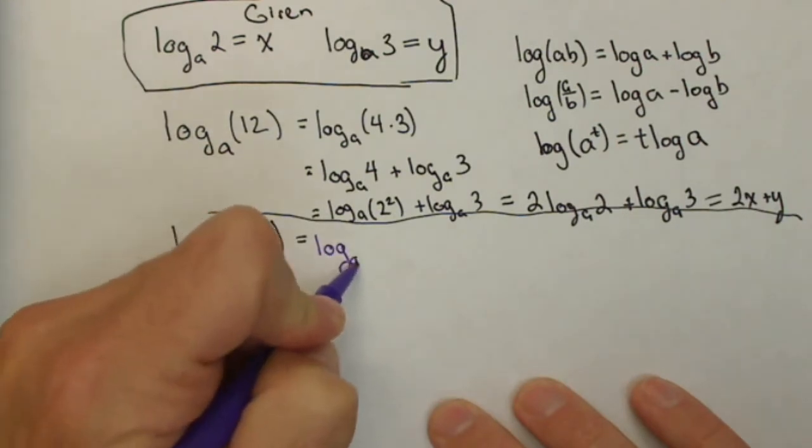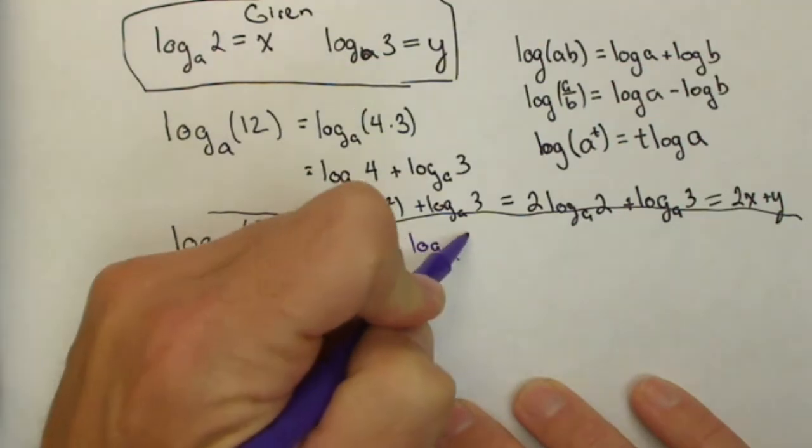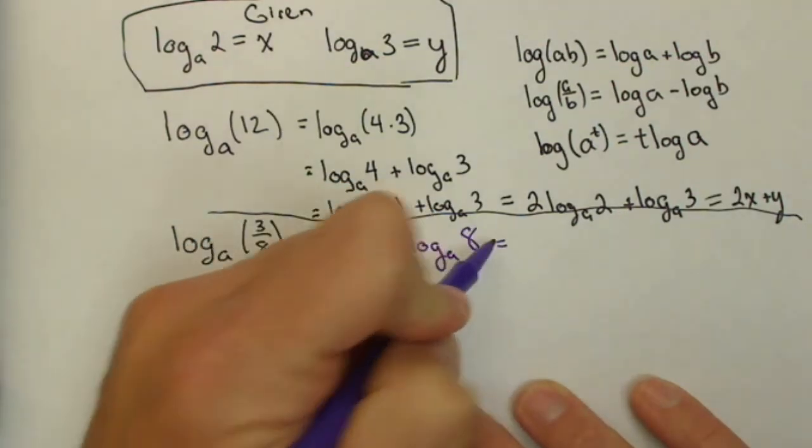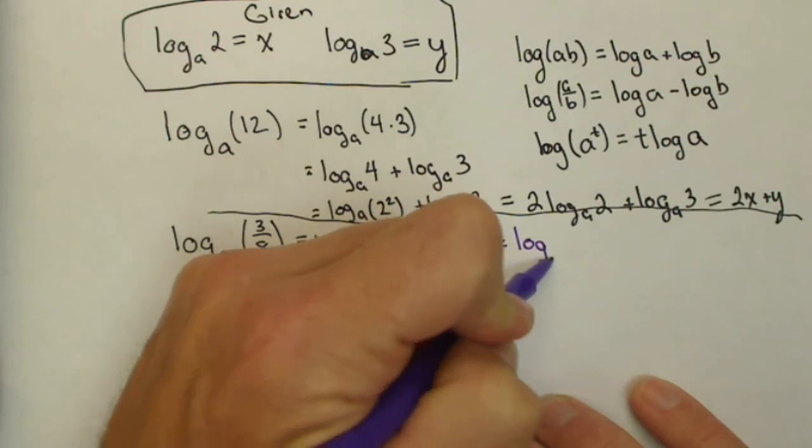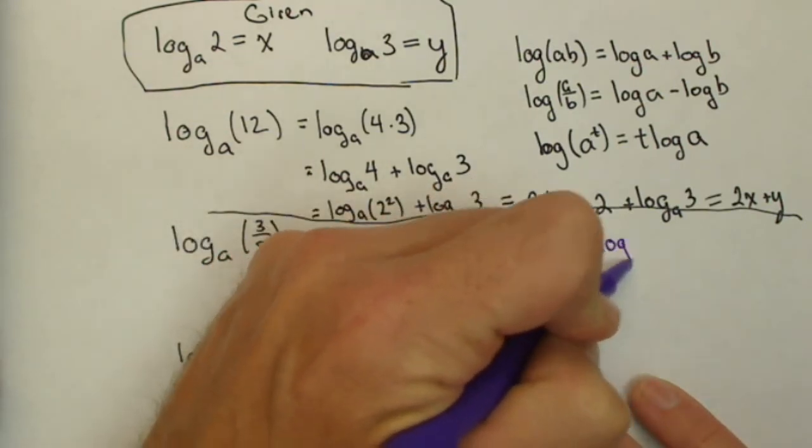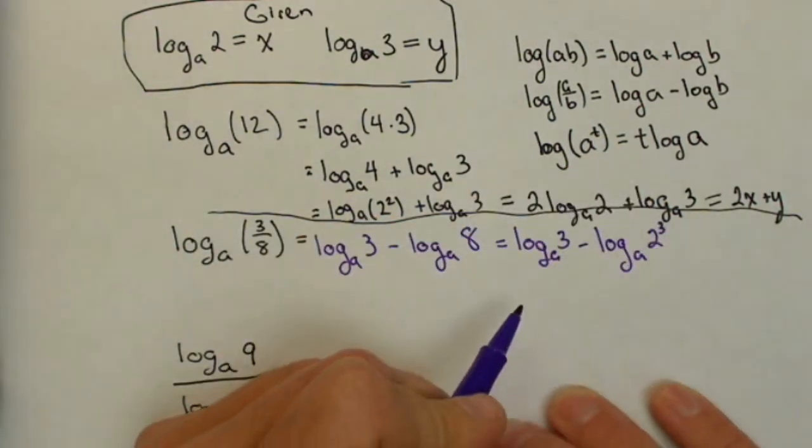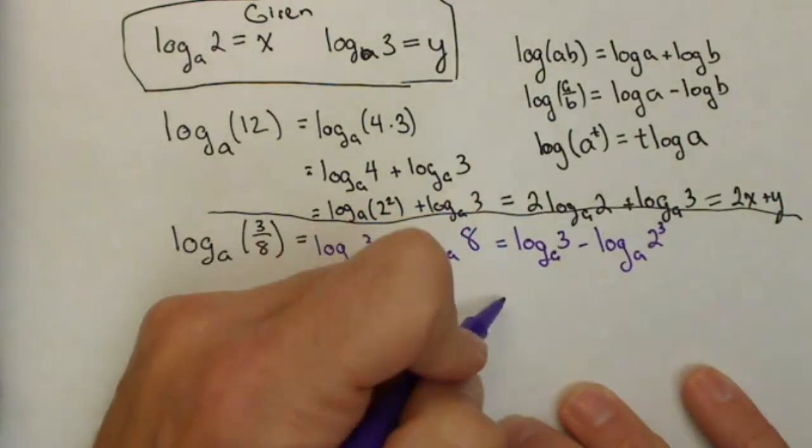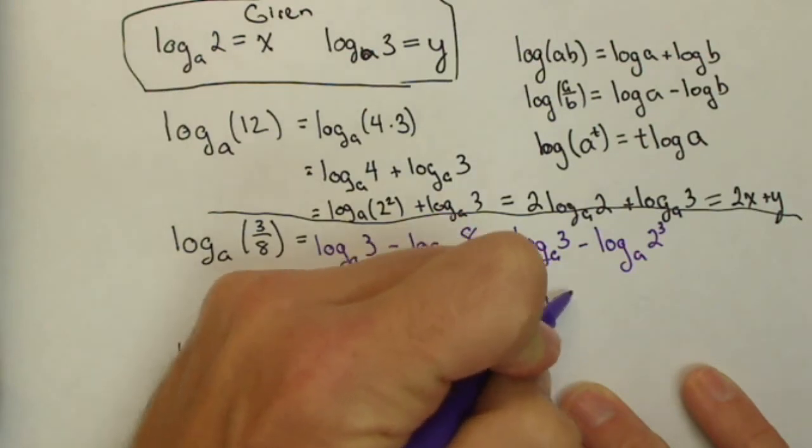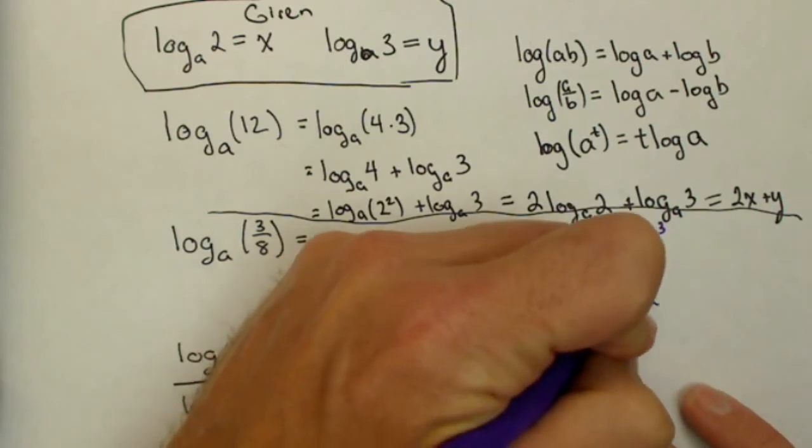Log base a of 3 minus log base a of 8, and with the log base a of 8 we could write that as 2 cubed which will allow us to pull that 3 out front. So we have log base a of 3 minus 3 log base a of 2.